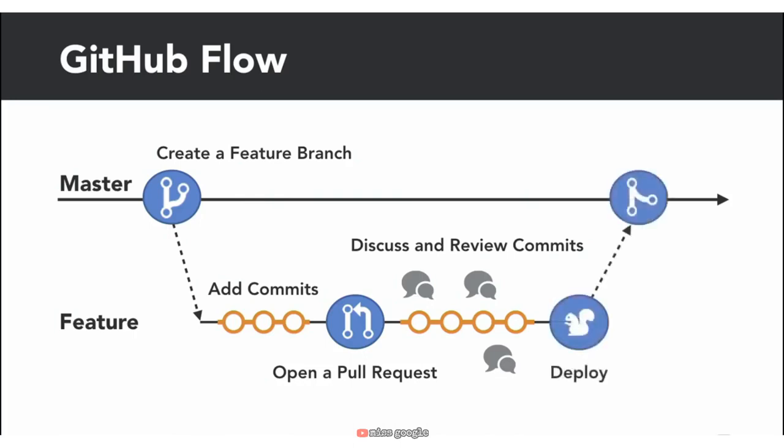After you've opened your pull request and have received feedback and made the needed changes, you can deploy your branch for final testing and to verify those changes in production. And once verified, you can then merge your branch into the master branch to incorporate your changes into production.